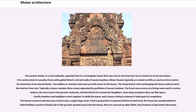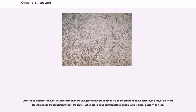Any livestock is kept below the house. Chinese and Vietnamese houses in Cambodian towns and villages are typically built directly on the ground and have earthen, cement, or tile floors depending upon the economic status of the owner. Urban housing and commercial buildings may be of brick, masonry, or wood.